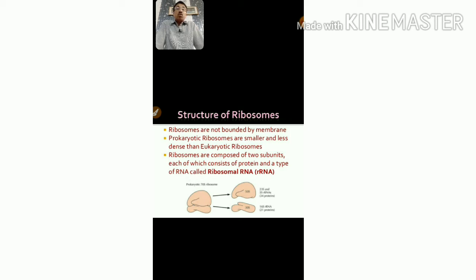When we talk about prokaryotic ribosomes, they are smaller and less dense than eukaryotic ribosomes. This means they are small and the density is less compared to eukaryotic ribosomes.